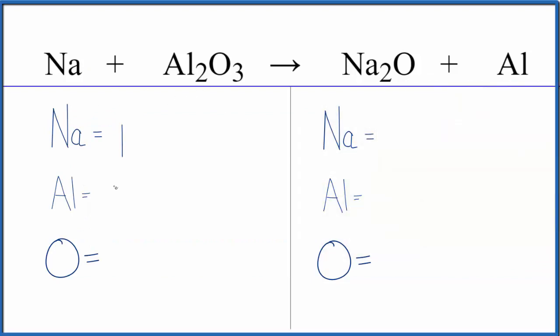We have one sodium atom, two aluminums, three oxygen atoms. Product side, we have two sodiums, one aluminum, and just one oxygen.